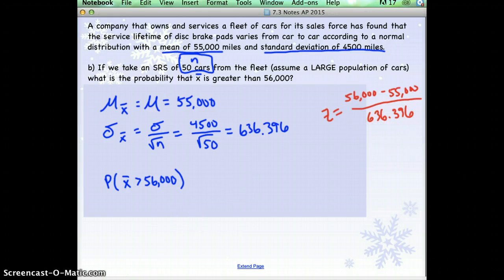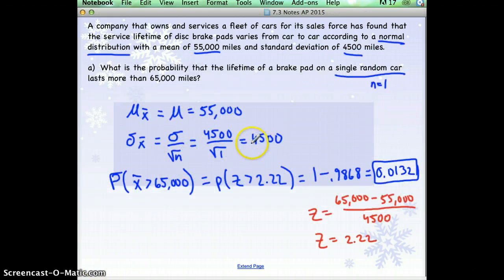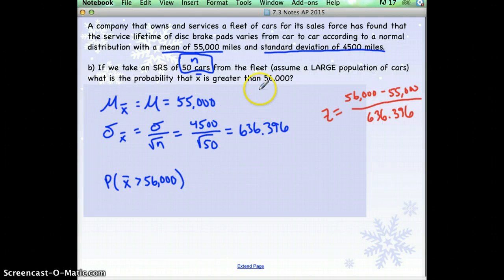divide by the standard deviation, which is 636.396. The only reason in that last problem the standard deviation was the same was because our sample size was 1. It was a single random car. Now, it's 50 cars. So that's why our standard deviation changed so much. Okay, when you compute the z, you get 1.57.